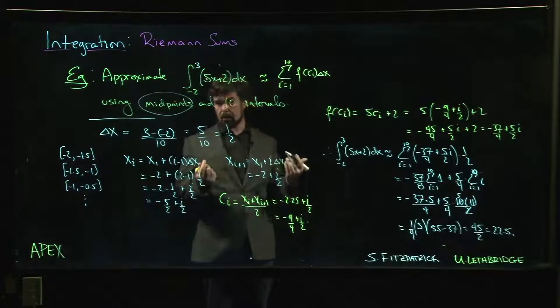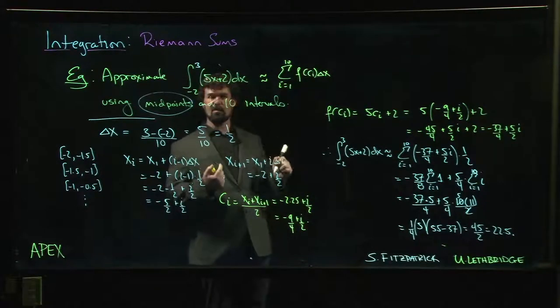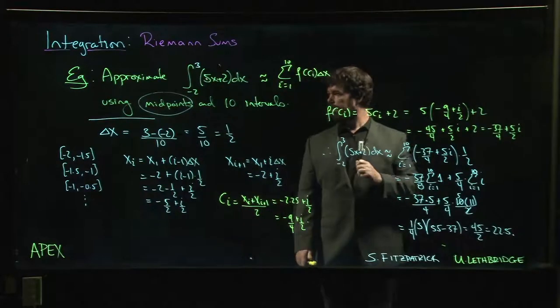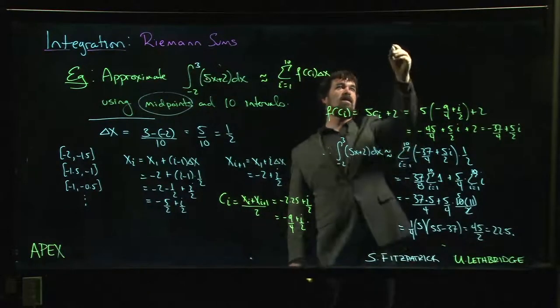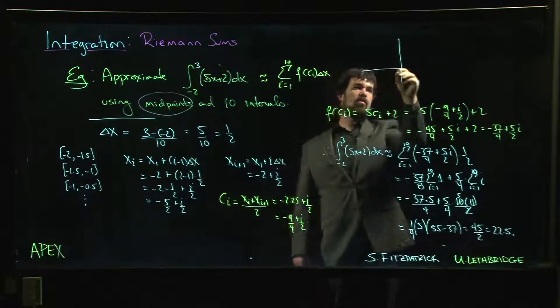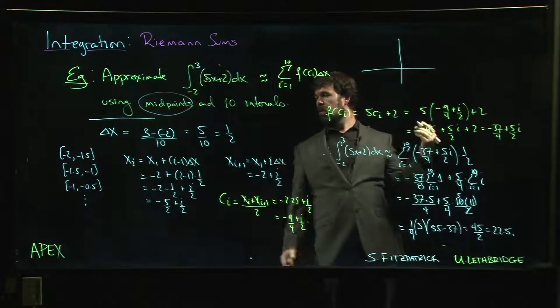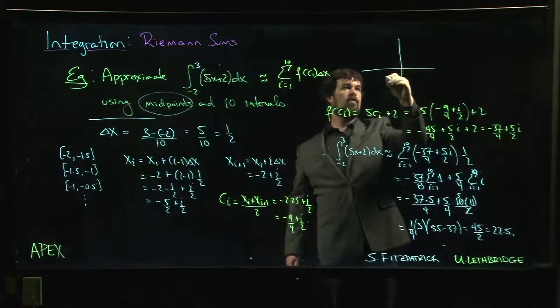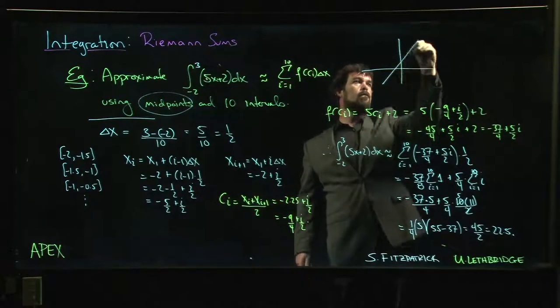Now, what's interesting here, it turns out that for linear functions, midpoints give you the exact answer. It's not usually the case, but in this case it is. We know what this thing looks like. Slope 5, intercept 2.